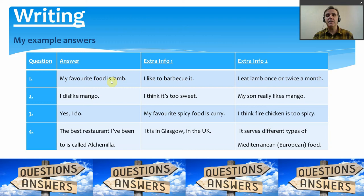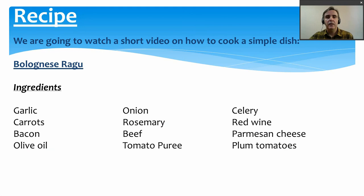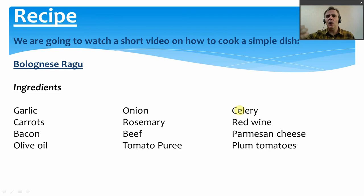The last thing we are going to do today is watch a short video on how to cook a simple dish — a bolognese ragu, which is what people usually serve with spaghetti or any other types of pasta. Before we watch, let's look at the ingredients. A lot of this we already talked about in our vocabulary part today. The things he is going to use are garlic, onion, celery — a long green stick vegetable — carrots, rosemary (a type of herb), red wine, bacon, beef, and parmesan cheese.